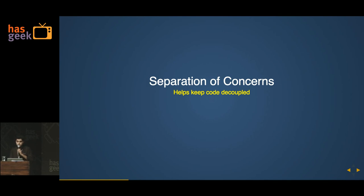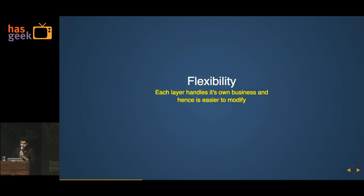The second thing is separation of concerns. It helps your code be decoupled, and decoupled code is better code because it is easier to modify. It's flexible — each layer will do its own stuff, and if you want to change any layer, you can do so without affecting the other parts of your app.